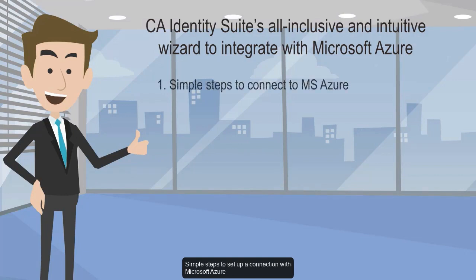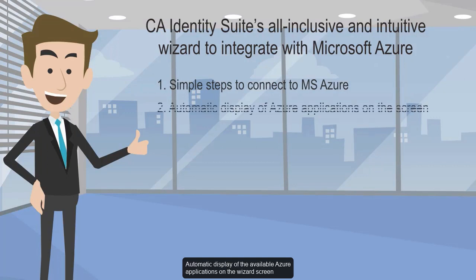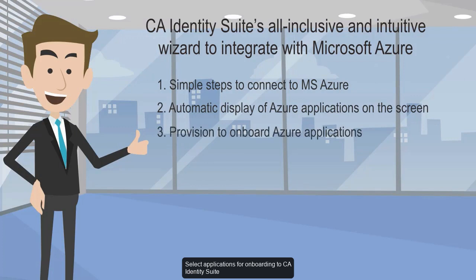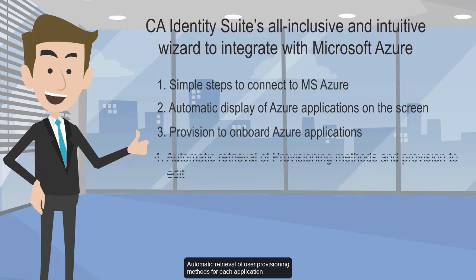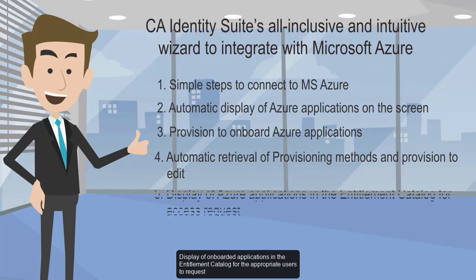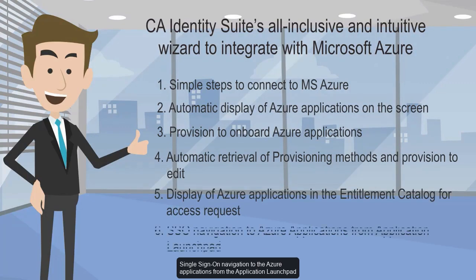Simple steps to set up a connection with Microsoft Azure. Automatic display of the available Azure applications on the wizard screen. Select applications for onboarding to CA Identity Suite. Automatic retrieval of user provisioning methods for each application, with an option to edit the way users are assigned to the applications. Display of onboarded applications in the entitlement catalog for the appropriate users to request.